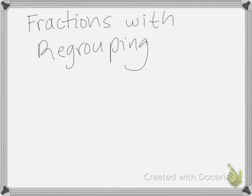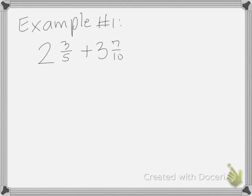Let's go ahead and start working on the first problem, the first example. The first step is to set up the problem. So it's going to be 2 3/5 plus 3 7/10. We realize that the denominators are different, so we have to find the least common denominator of the fraction.